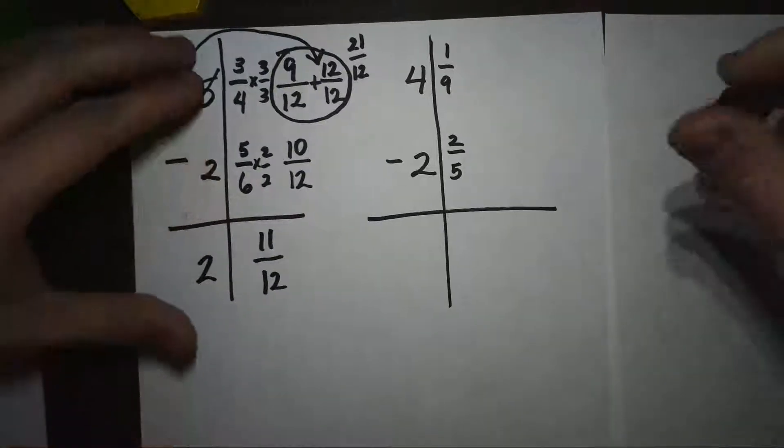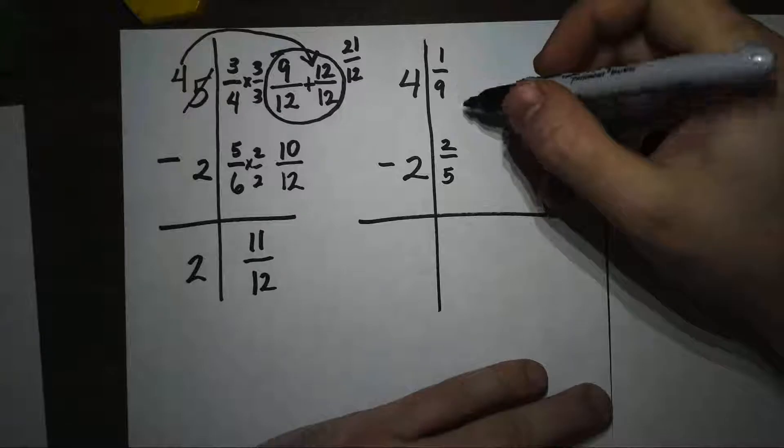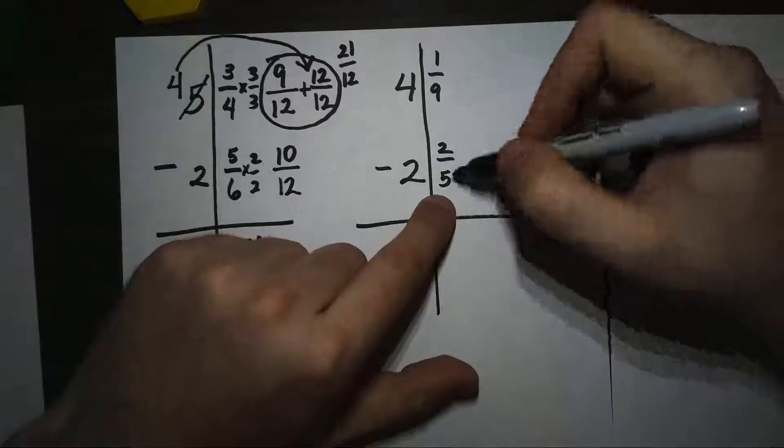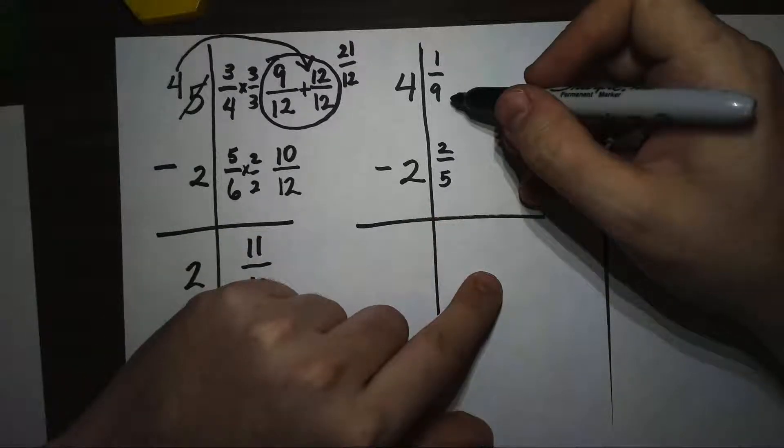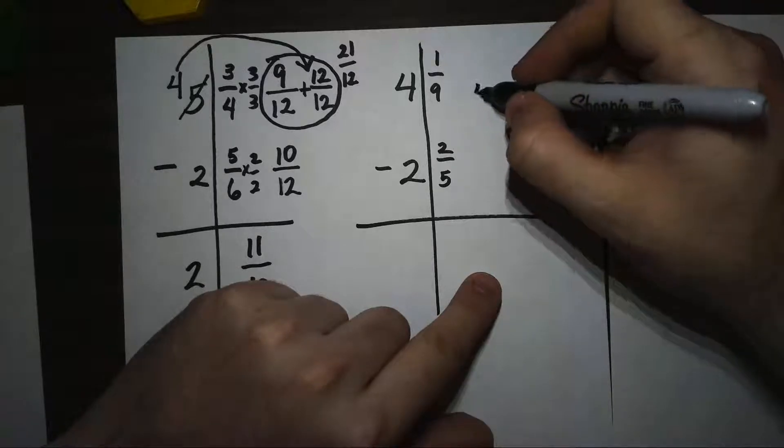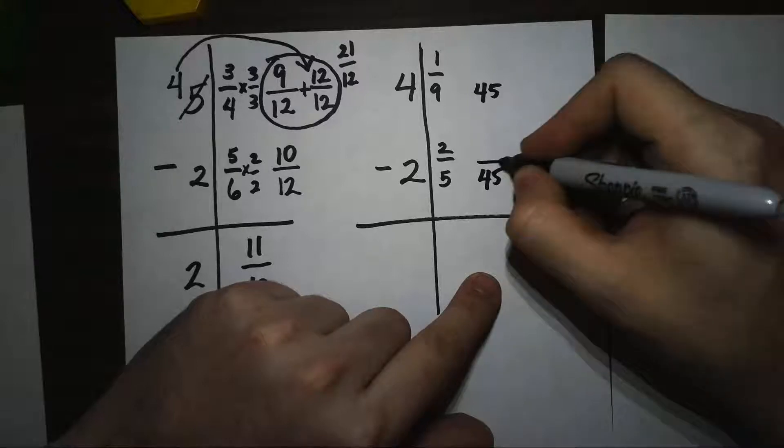Another problem: 4 and 1/9 minus 2 and 2/5. Now in this problem, I'm going to do the same thing first. I'm going to look for a common denominator of 9 and 5. So if I count by 9s: 9, 18, 27, 36, 45—5 goes into 45. So I'm going to use 45 as my common denominator.